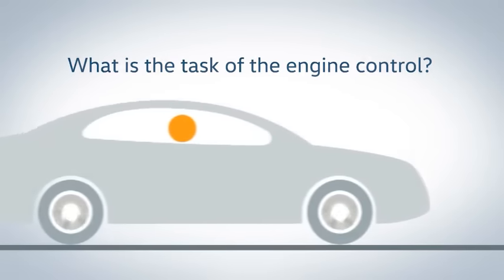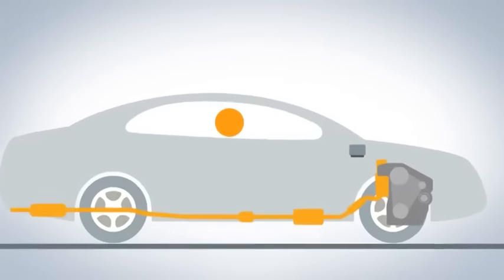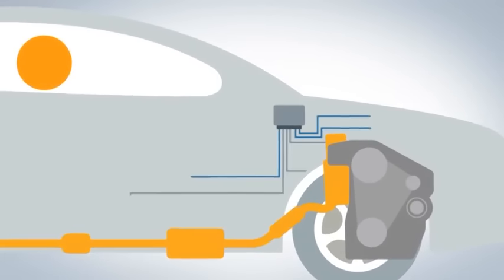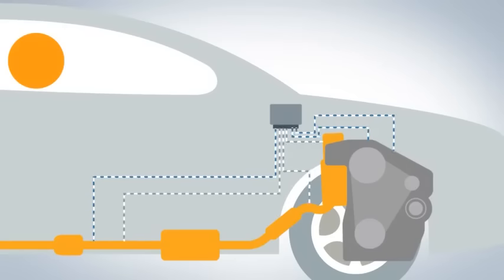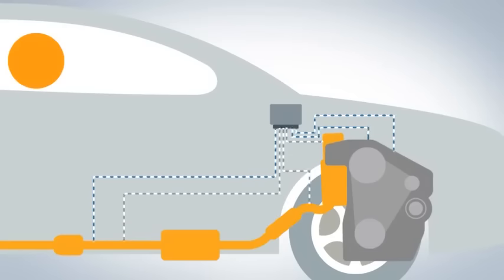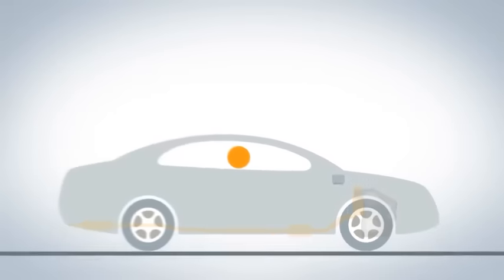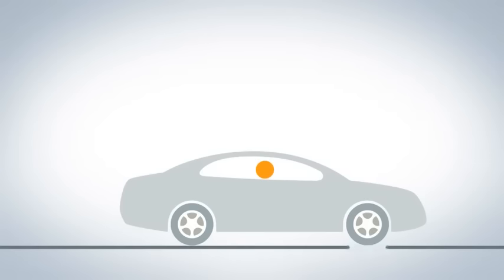An important part of a modern engine is the engine control. Its complex software processes the signals of many sensors in the vehicle and ensures that the cars offer good performance profiles with the lowest possible consumption and comply with the required exhaust standards at the same time. Testing determines whether a vehicle fulfills the legal requirements.